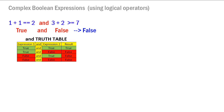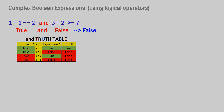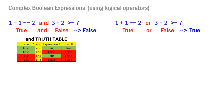This is what we call a truth table. We look at expression 1 and expression 2 and determine the result. With 'and', it's only true if both sides are true. If one or the other is false, the expression evaluates to false, and if both are false it also evaluates to false.